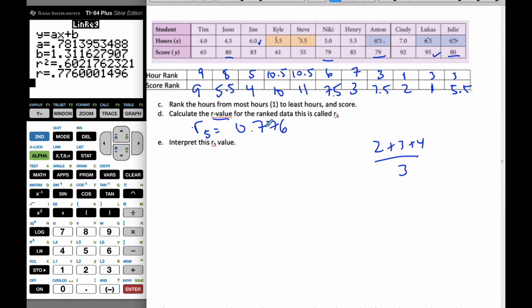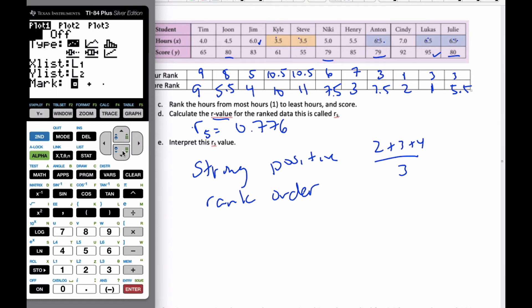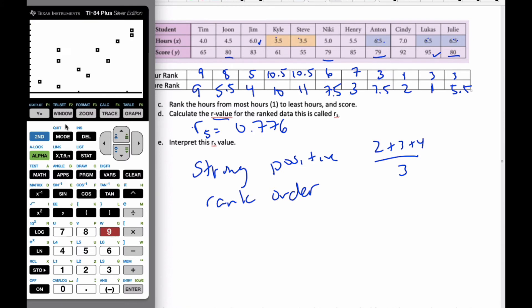Now my R value, my R sub S, says 0.776. What this R value actually means is it is a strong positive rank order. That means as one goes up, someone's hours relative to each other, like the ranking of the hours versus the ranking of the scores, as one goes up, the other one goes up fairly well too. If I take a look at the scatter plot, you can see that again, as one goes up, the other tends to go up as well.